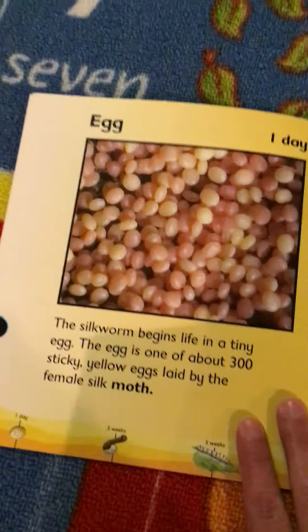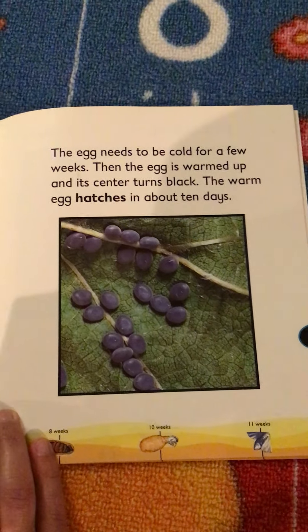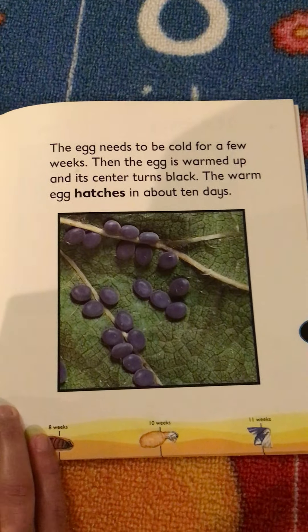The silkworm begins life as a tiny egg, and the egg is one of about 300 sticky yellow eggs laid by the female silk moth. The egg needs to be cold for a few weeks. When the egg is warmed up and its center turns black, the warm egg hatches in about 10 days.